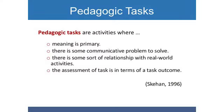The second characteristic of tasks that Skien mentions is that there is some communicative problem to solve. In the literature, this is also referred to as having a gap, for example an information gap or an opinion gap between the communication partners. In the case of the MAP task, there is a clear information gap: one of the language users knows the directions towards the British Museum, whereas the other does not.